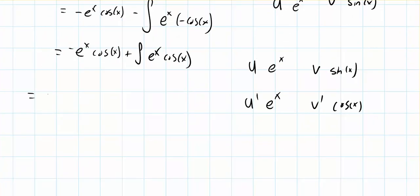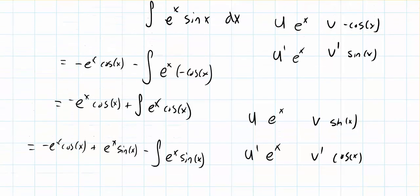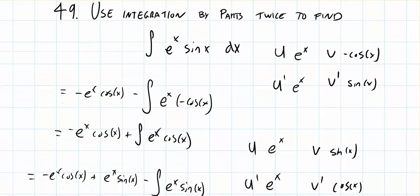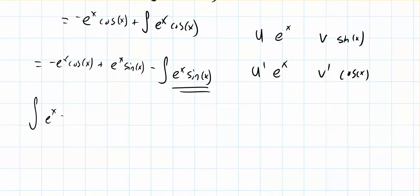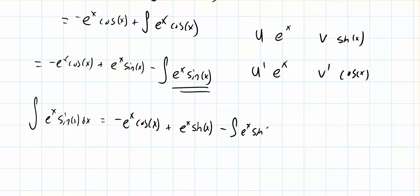We integrate by parts once again, giving us negative e to the x cosine x plus u times v, which is e to the x sine x, minus the integral of u prime v, or e to the x sine of x. Now we have to remember what we're looking for — we're looking for the integral of e to the x sine x, and that appears right here. So rewriting the full equation: the integral of e to the x sine x dx equals negative e to the x cosine x plus e to the x sine x minus the integral of e to the x sine x.